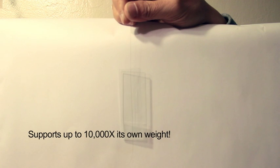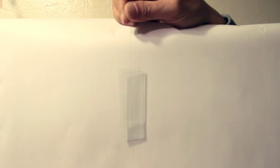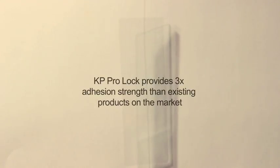And yet, with the super strong adhesion power of Keeper's Products ProLock, the hair strand can support up to 10,000 times its own weight.